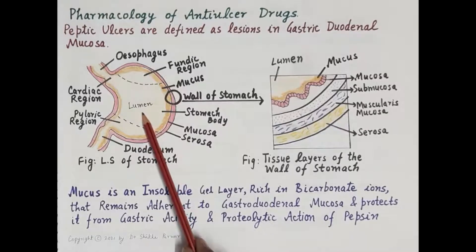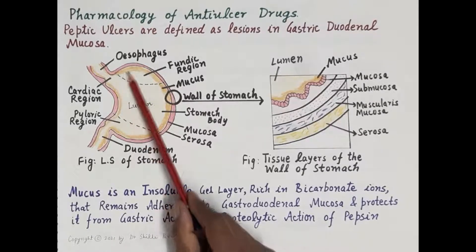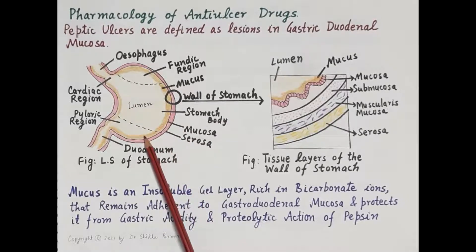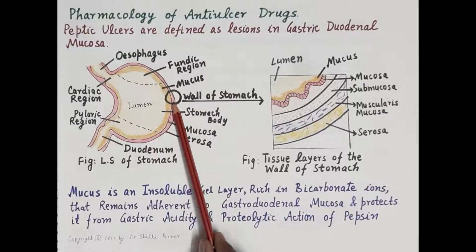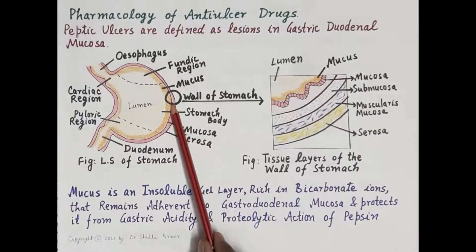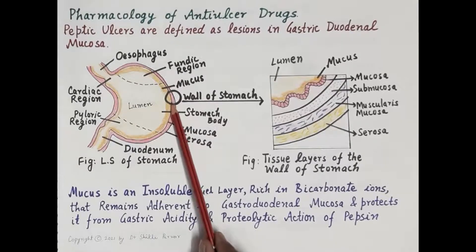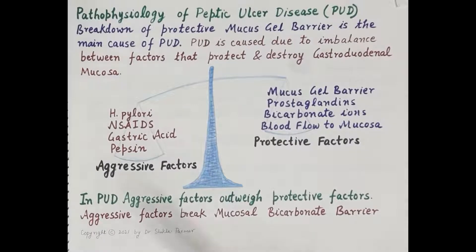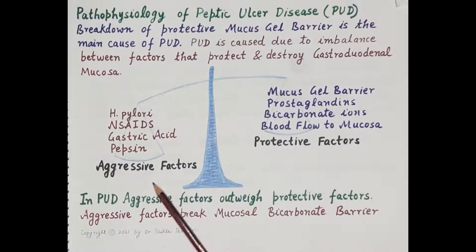Breakdown of this mucus gel layer exposes the wall of the stomach to the toxic effects of gastric acid and pepsin, leading to digestion of the gastroduodenal mucosa and the wall of the stomach. This results in the formation of lesions and causes the genesis of peptic ulcer disease. There are two types of factors: aggressive factors and protective factors.